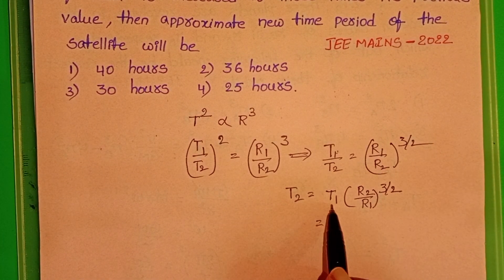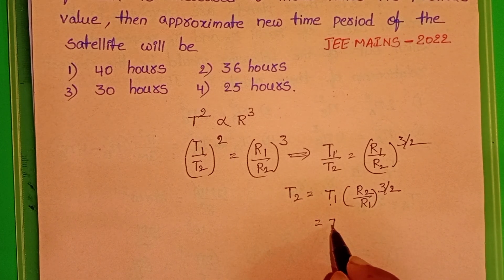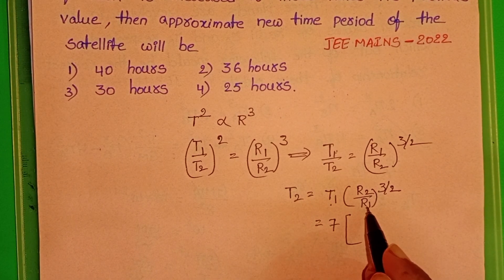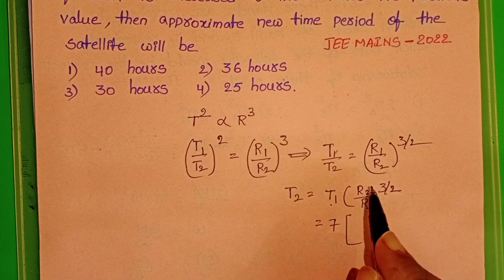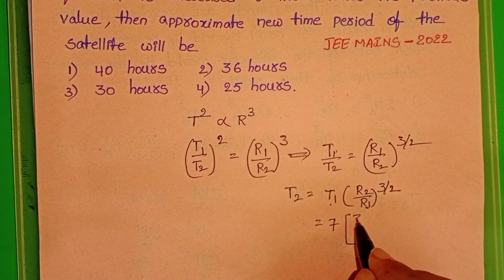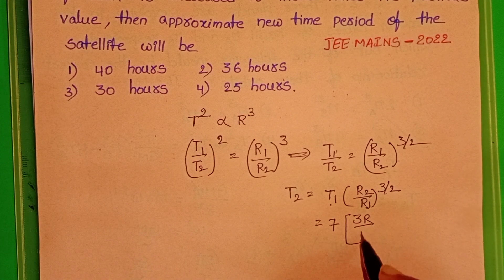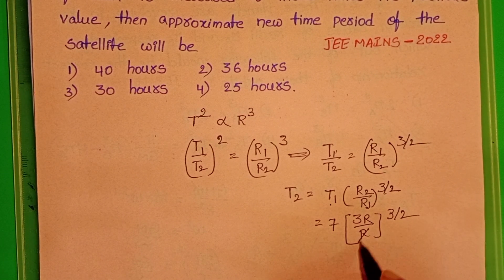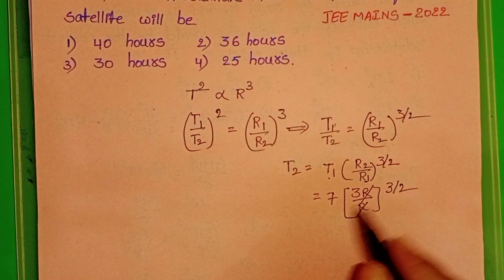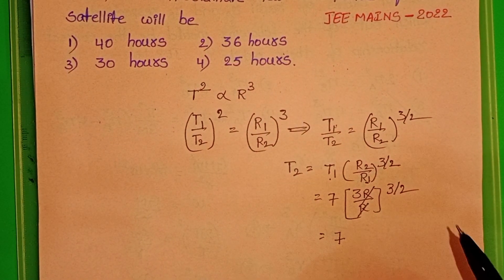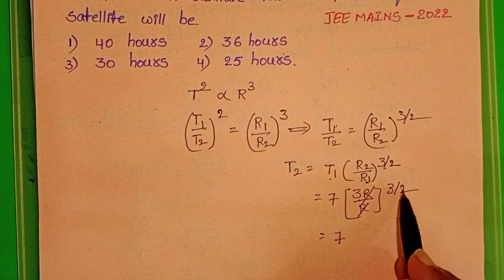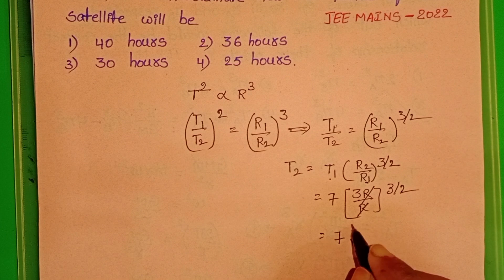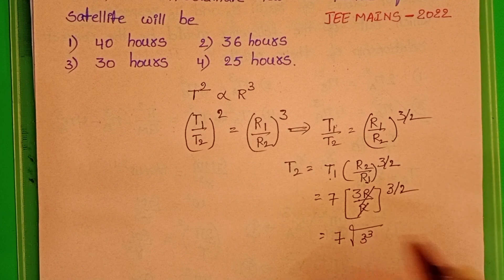The initial time period T1 is 7 hours and the initial radius is R. After the increase, the new radius is 3R. Substituting: T2 equals 7 into 3R by R whole power 3 by 2. Here R cancels, giving 7 into 3 whole power 3 by 2, which is the square root of 3 cubed.